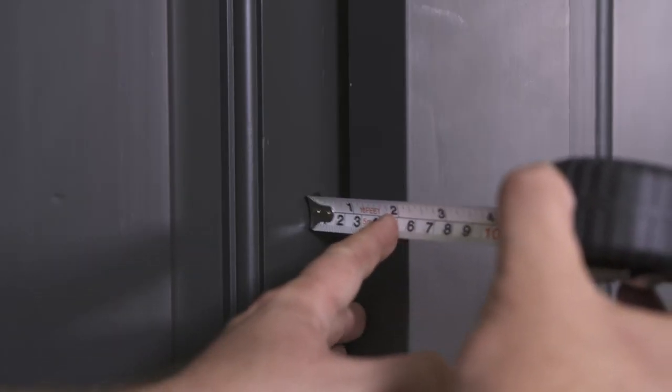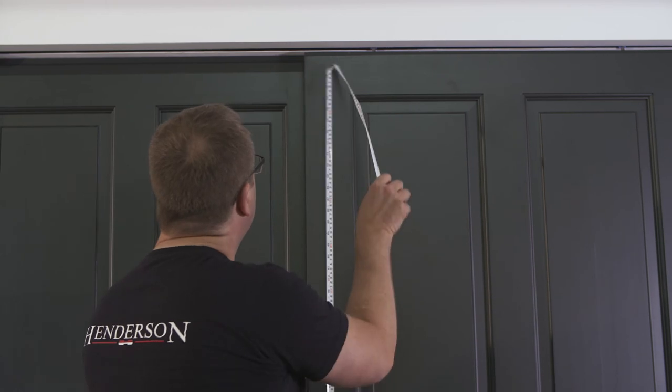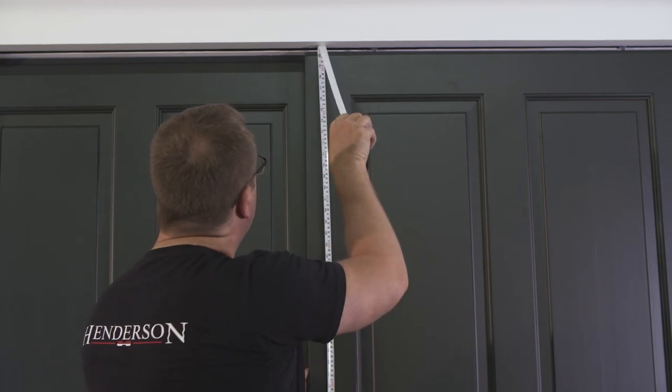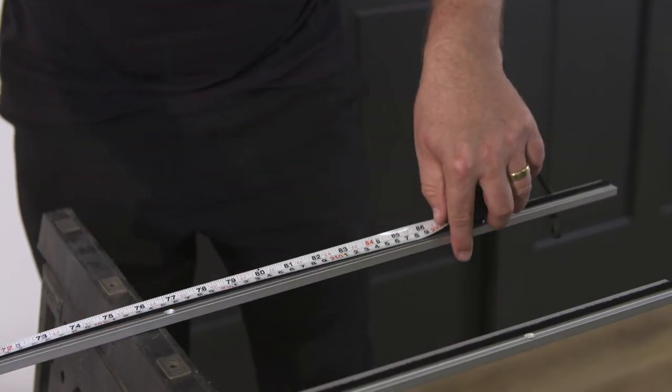Check there is a gap of 12 mm between the fixed panel door and your sliding door. Measure the height of the opening and cut down the interlocking profiles to the same size.